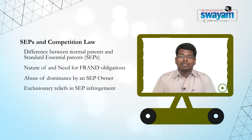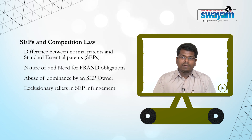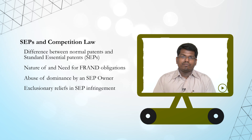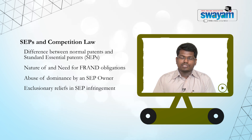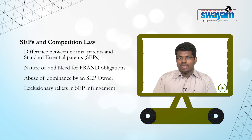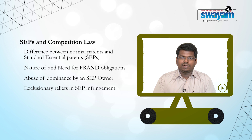However, the burden of proving that the defendant has been an unwilling licensee lies on the patentee, considering that he holds a monopoly which gives him extensive market power. In stark contrast to other litigations — where one would expect the defendant to show that he has been reasonable — in a situation concerning a standard essential patent, the obligation is on the patentee who seeks an exclusionary relief to show that he has no other option but to seek exclusionary relief since the defendant is an unwilling licensee.